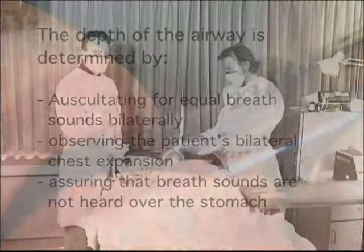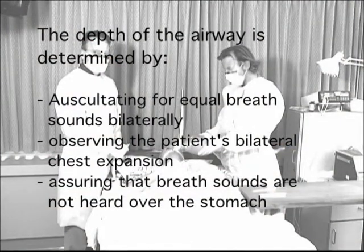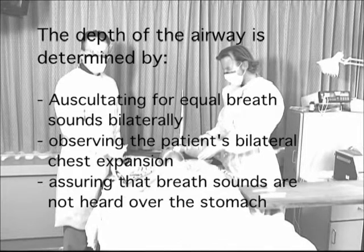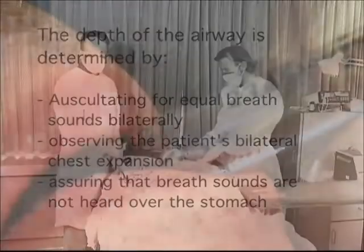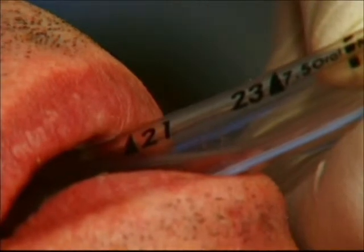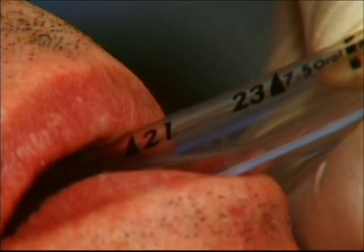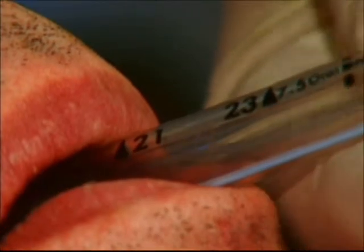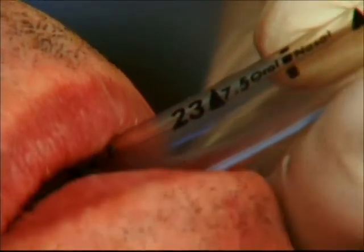The physician determines the depth of the airway for proper placement by listening for equal breath sounds bilaterally with a stethoscope — auscultation — observing the patient's bilateral chest expansion, and assuring that breath sounds are not heard over the stomach. The tube should remain at that depth at all times unless otherwise specified by a physician. In this case, the tube is at 21 and needs to be advanced to 23.